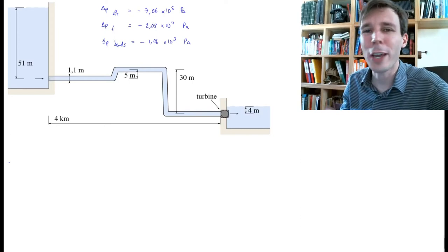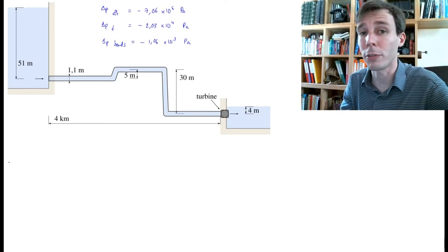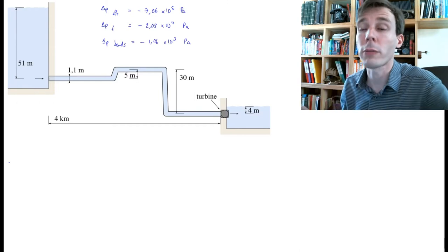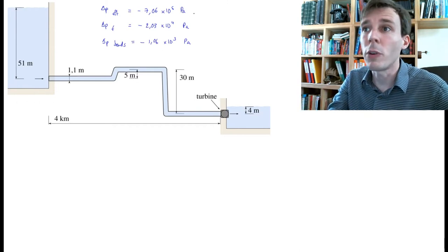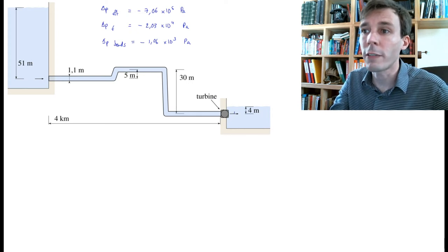In this problem, we want to calculate the power that is made available to the turbine as the water flows through the pipe between those two tanks. We have calculated before that across the two sides of the turbine...